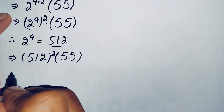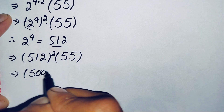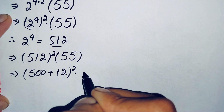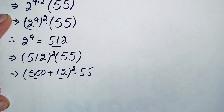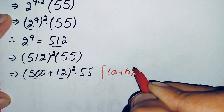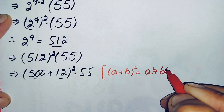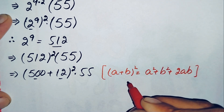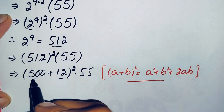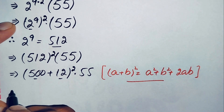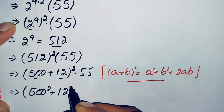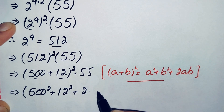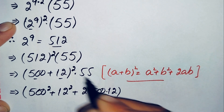We can write 512 as 500 plus 12, so the expression becomes 500 plus 12, whole squared, times 55. Now we apply the identity a plus b whole squared equals a squared plus b squared plus 2ab, where a is 500 and b is 12.